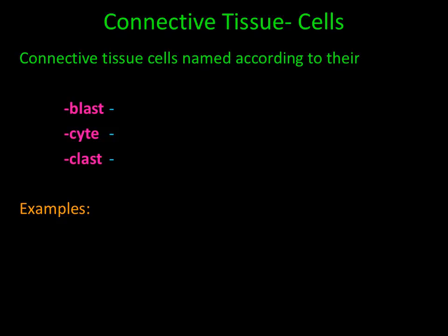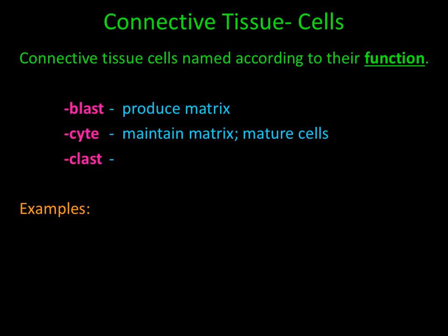Connective tissue cells are named according to their functions. Based on their functions, connective tissue cells can end in the suffix BLAST, CITE, or CLAST. A connective tissue cell ending in BLAST produces matrix. A connective tissue cell that ends in CITE is a mature cell that maintains the matrix. And a connective tissue cell that ends in CLAST destroys or breaks down matrix.